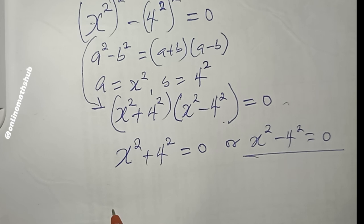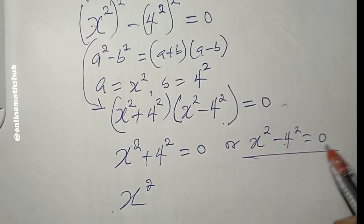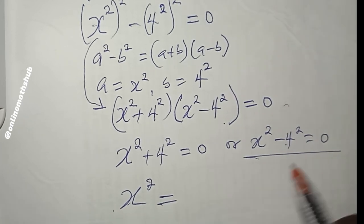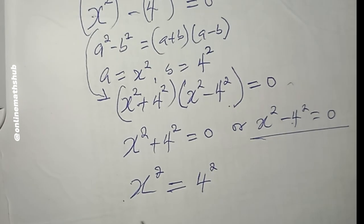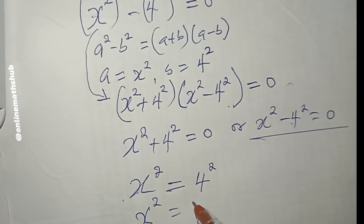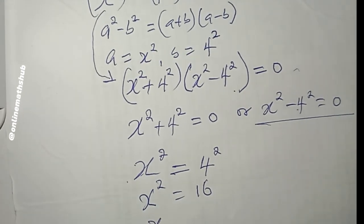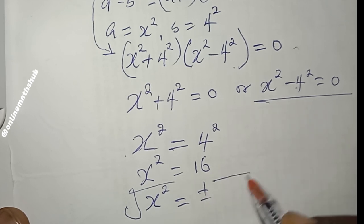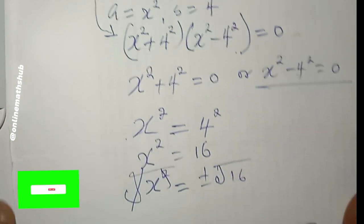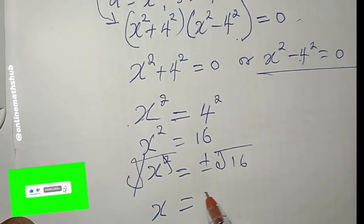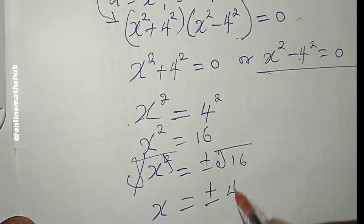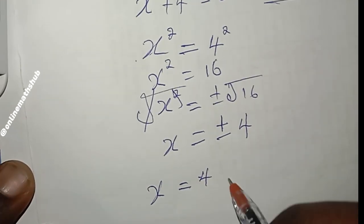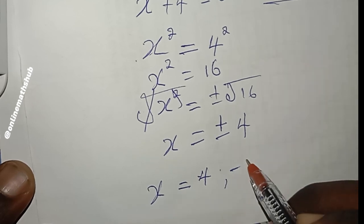Let's deal with x squared minus 4 squared equals zero first. Taking the minus 4 squared to the right-hand side gives x squared equals 4 squared, which is 16. Taking the square root of both sides, x equals plus or minus the square root of 16, which is 4. So our first two values are x equals positive 4 and x equals negative 4.